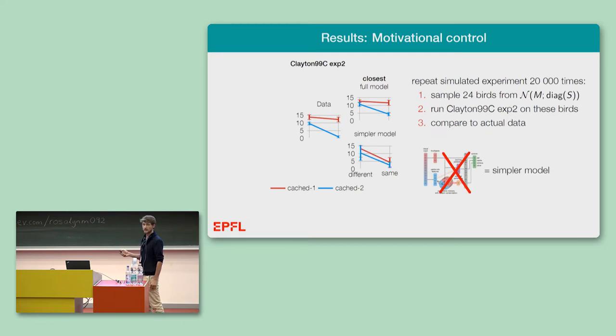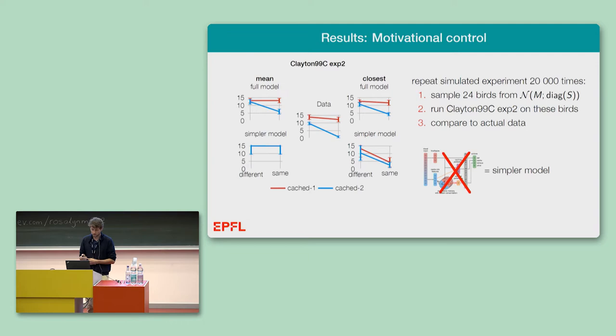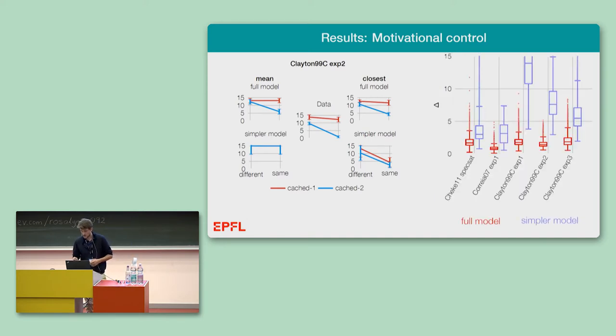This is not the case for a simpler model, even also simulating it 20,000 times, where the simpler model does not have the hunger modulation, does not have this motivational control. And if we look across the mean across all these 20,000 simulated experiments, then this effect is even more prevalent. We see that the full model captures the main effect, but the simpler model doesn't.